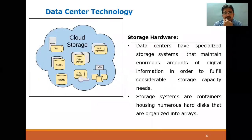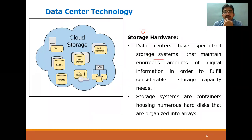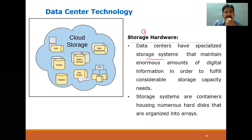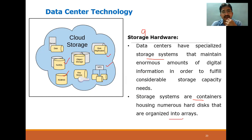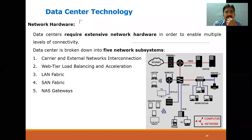The ninth feature of DCT is storage hardware. When storage capacity is full, we need to overcome the problem. On the left-hand side we have cloud storage options like NoSQL, RDBMS, NFS, disk replicas, and other storage capacities that we can access based on requirement — for example, we did the RDS experiment using MySQL. Storage systems are containers housing numerous hard disks organized into arrays, and we can access whichever one we require.